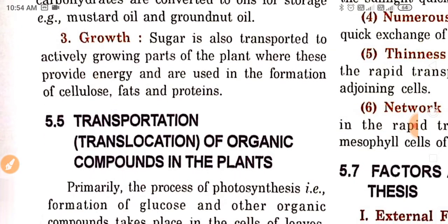Third is for growth. Sugar is also transported to actively growing parts of the plant, where it provides energy and is used in the formation of cellulose, fats, and proteins.